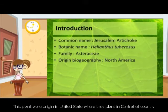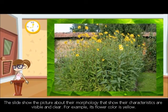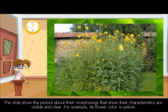Number 4: this plant originated in the United States, where it was planted in the central part of the country. The slide shows a picture about their morphology, showing their characteristics visibly and clearly. For example, its flower color is yellow.